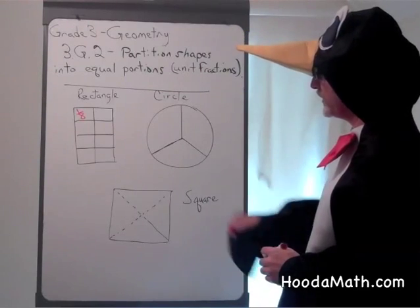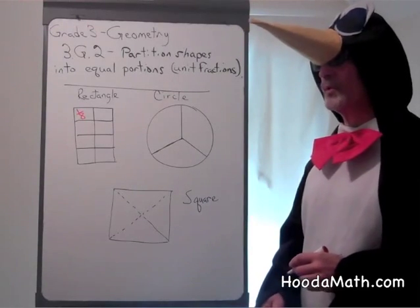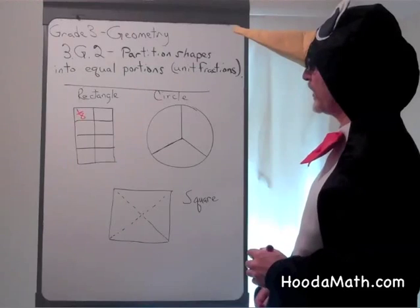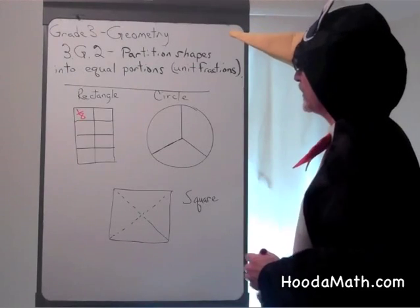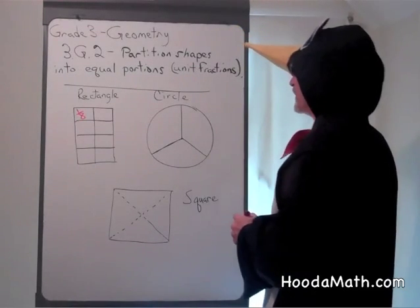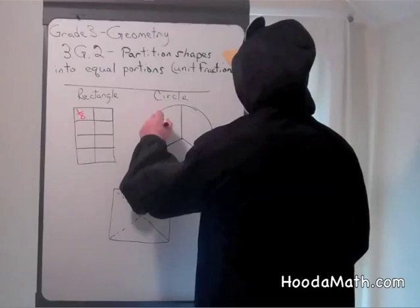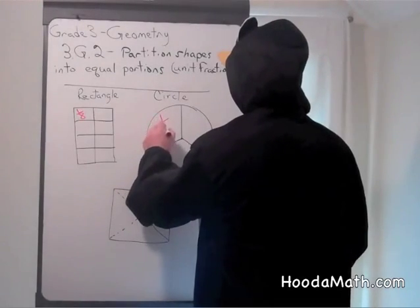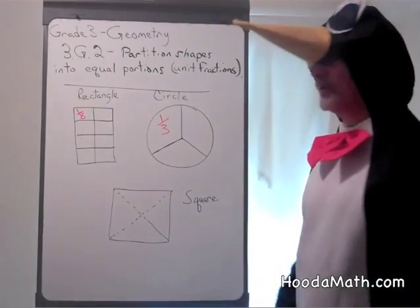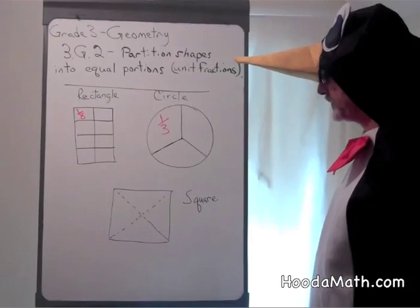Let's look at the circle. It's divided into three portions. What would the unit fraction be, or what would one of the portions equal? The area of one of the portions is one-third the area of the total circle.